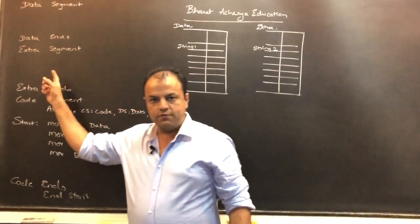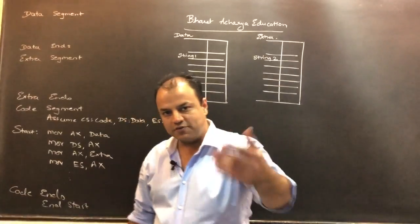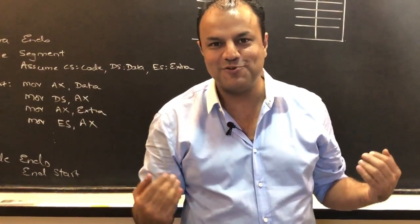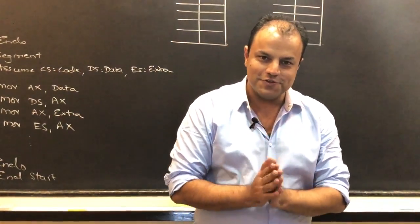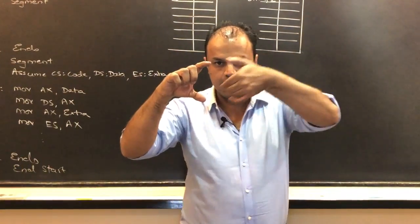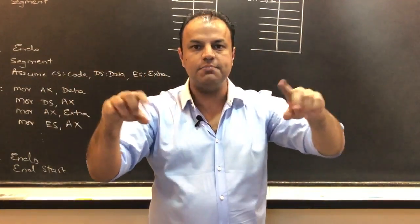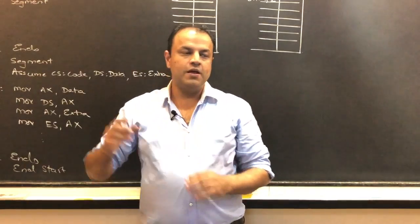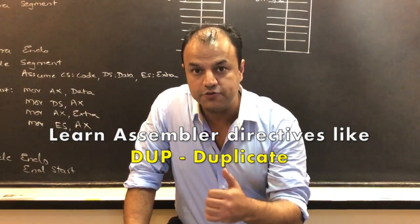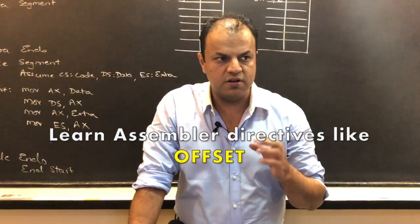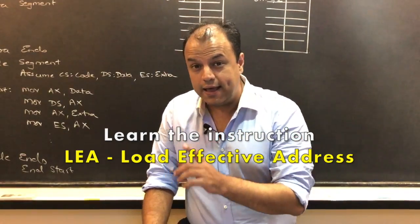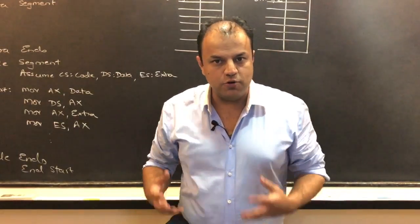Can you tell me why we stored the inverted string in the extra segment? Because if you learn string instructions — and if you don't know string instructions, first learn that — you know that compare strings only works between the data segment and the extra segment. So your given string has to be in the data segment and the inverted string has to be in the extra segment. Only then they can be compared with the compare string instruction. So you learn how to create arrays, some very interesting assembler directives — DUP, which stands for duplicate — and offset. You also learn the LEA instruction, which stands for load effective address, which is rarely used in programming but is important. There's so much to learn in this single program.